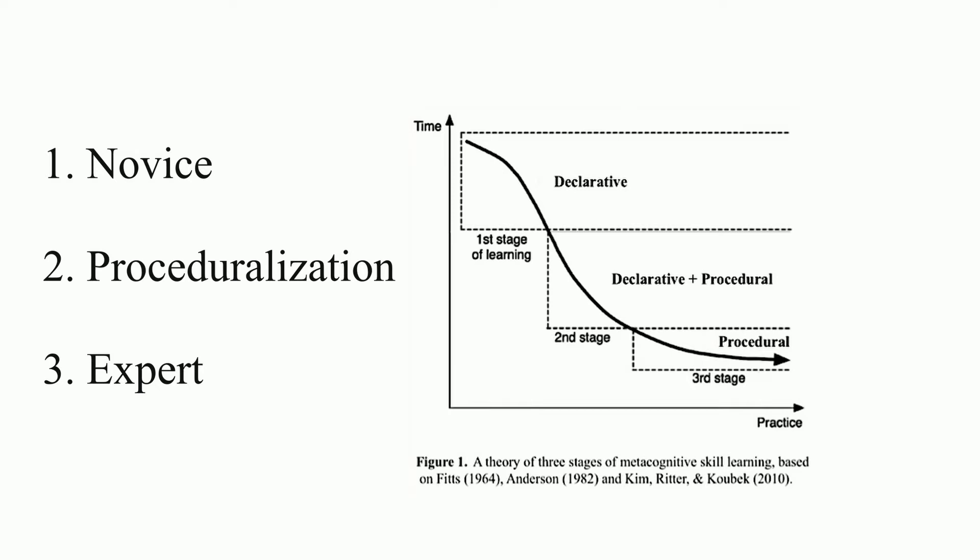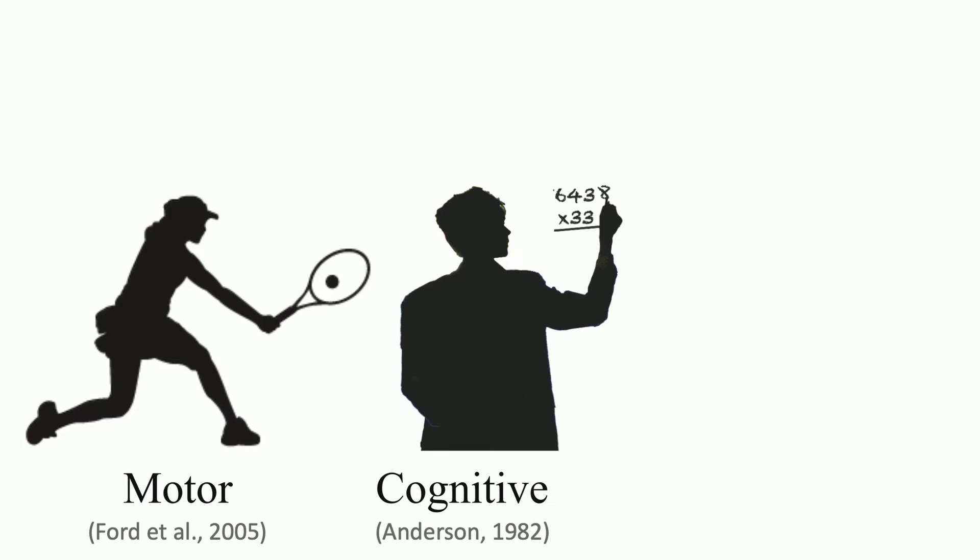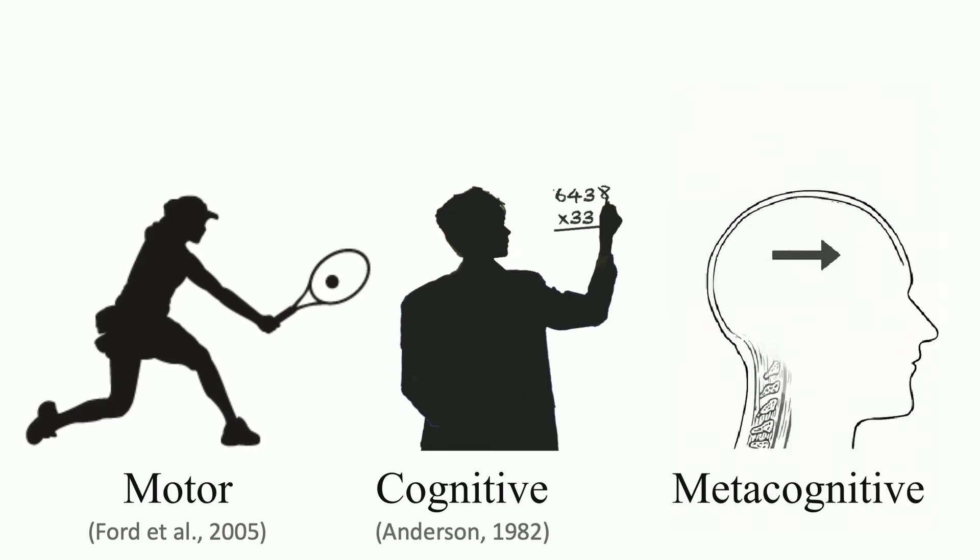Proceduralization occurs through practice, as declarative knowledge is converted into procedural knowledge that is fast and efficient. While this model has been successfully applied to motor skills and cognitive skills, it has not yet been applied to metacognitive skills.